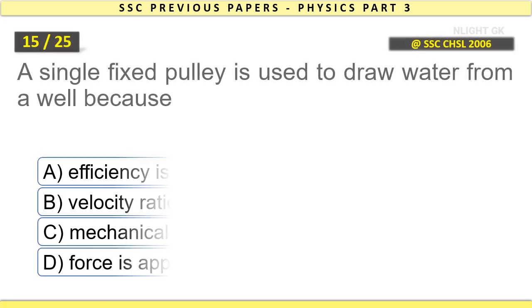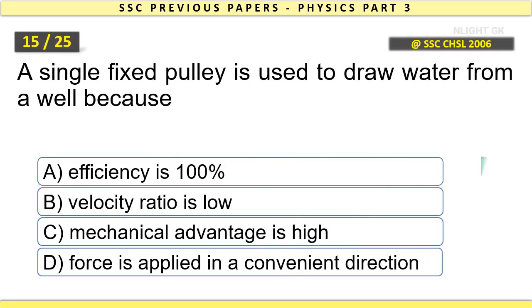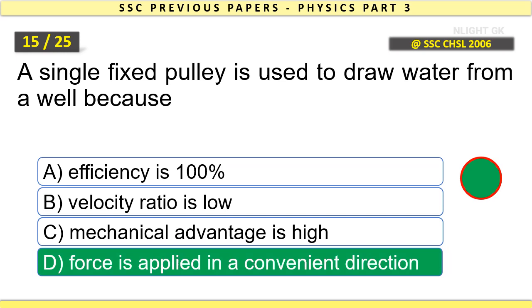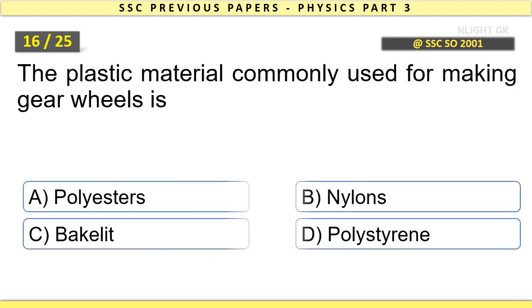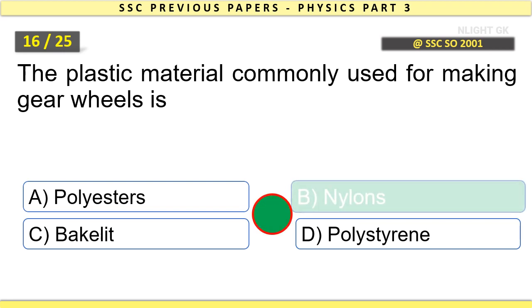A single fixed pulley is used to draw water from a well because force is applied in a convenient direction. The plastic material commonly used for making gear wheels is nylon.